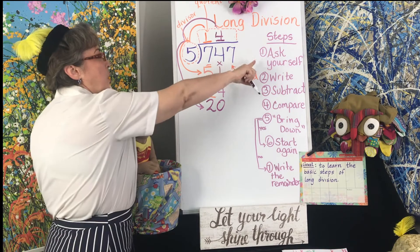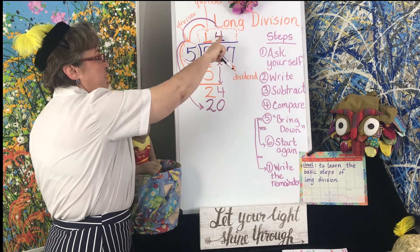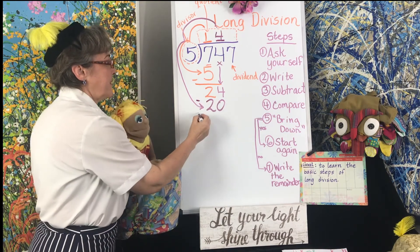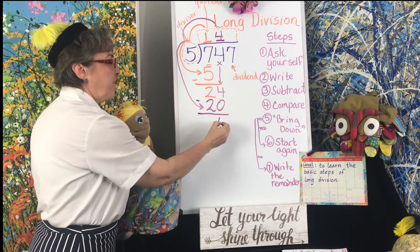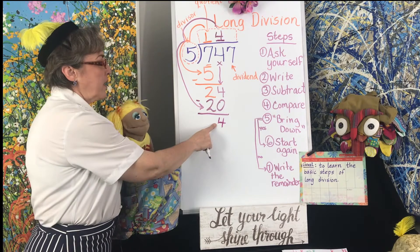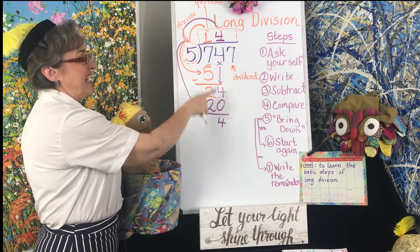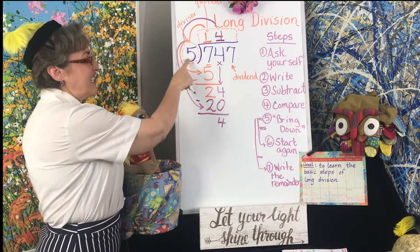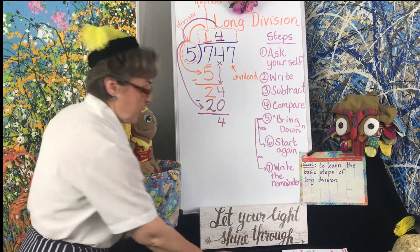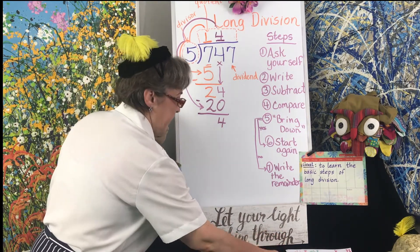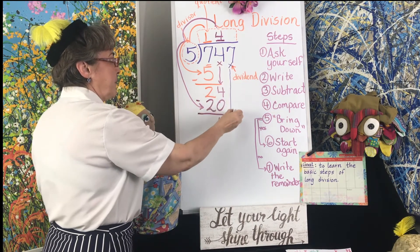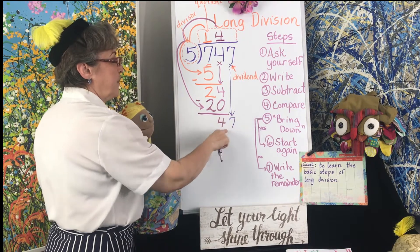So we asked ourselves the question, we wrote down the answer. 4 times 5 is 20. Now we're going to subtract. 24 minus 20 is 4. And now we're going to compare. Is 4 less than 5? Yes, 4 is less than 5. In that case, we can bring down. So now we're going to go to the next number here and bring that down. Now we have the number 47.